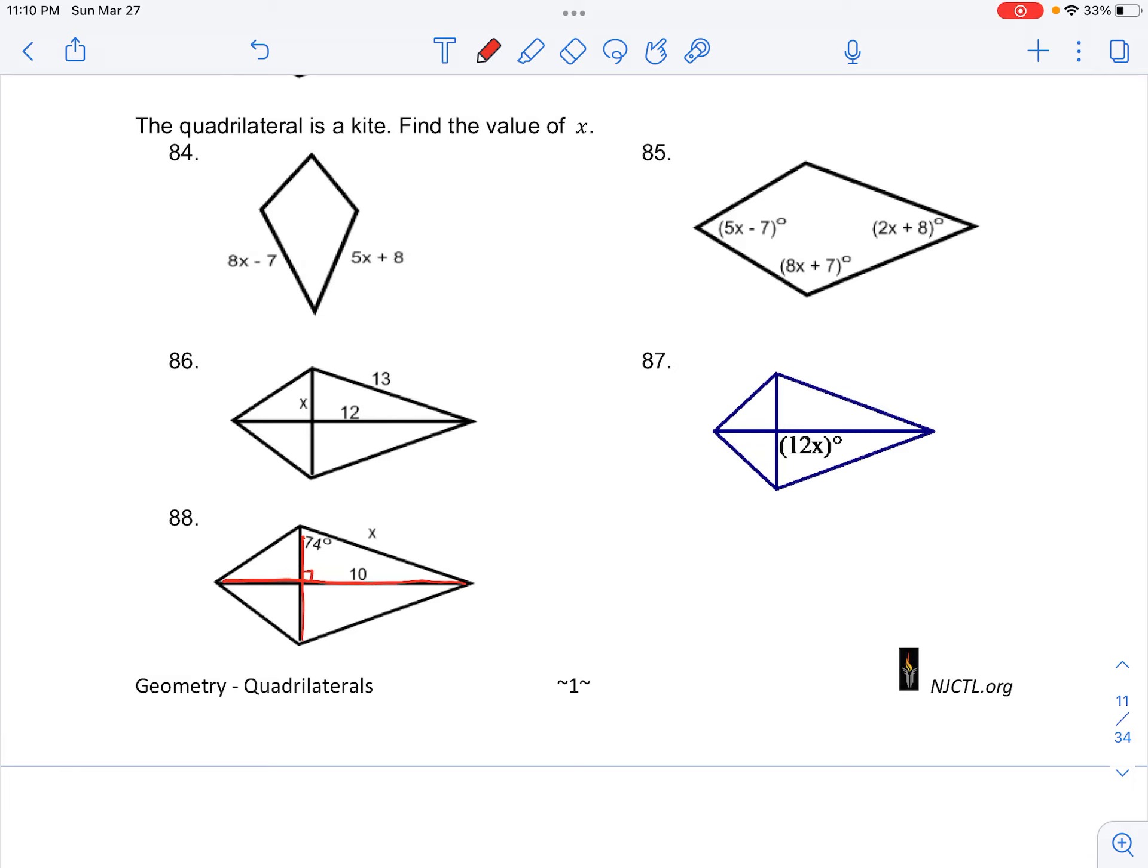So we can apply trigonometry in order to find the missing hypotenuse x of this triangle here. Applying the trig function of sine, we know that sine of this angle, 74 degrees, is equal to opposite, which is 10, over the hypotenuse, which is x.